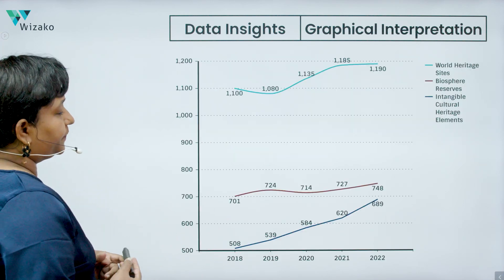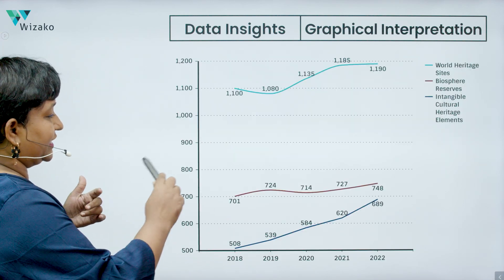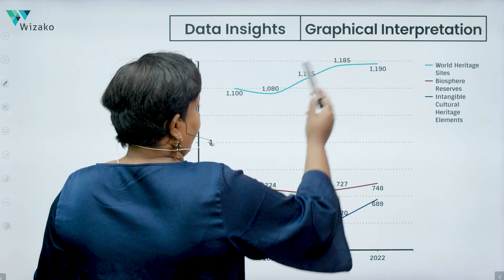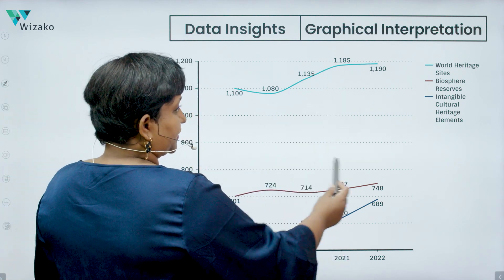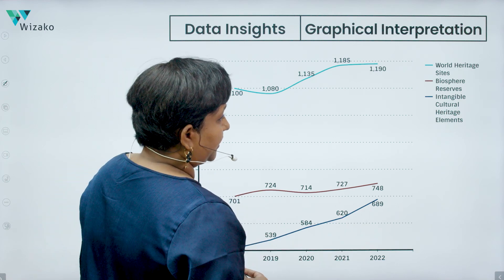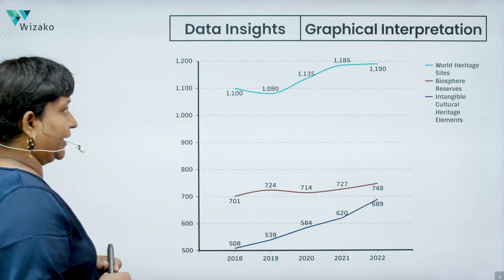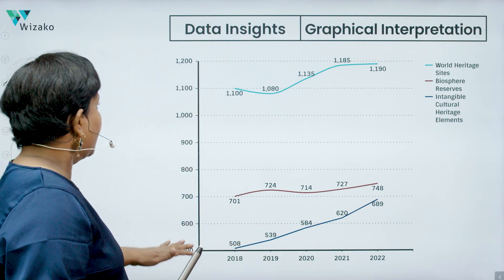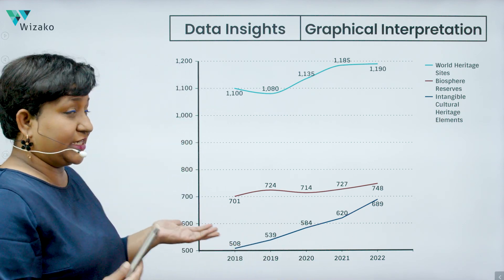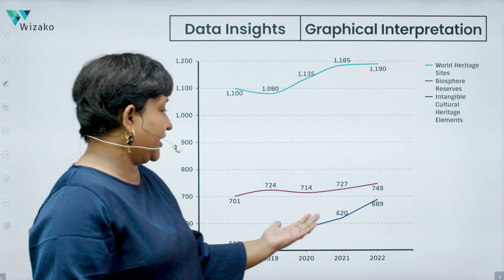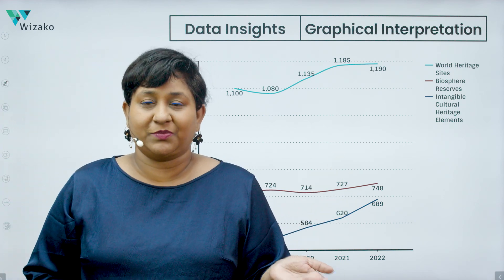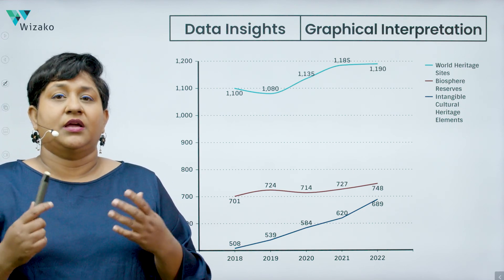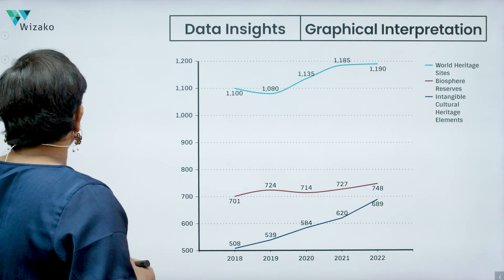Looking at the graph, there is a line for each of the three different things. World heritage sites are in the blue line, biosphere reserves are in the red line, and intangible cultural heritage elements are in the dark blue line. On the x-axis you have five years, the y-axis shows the numbers, and there are labels telling you exactly what numbers we are looking at.